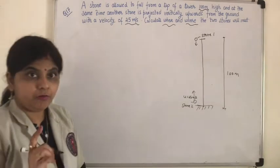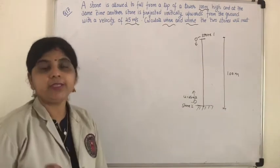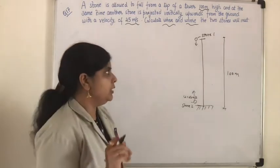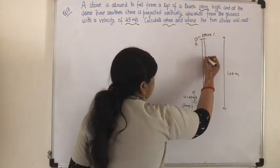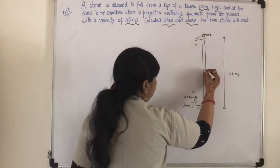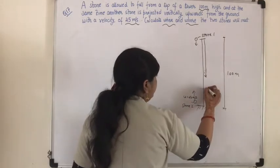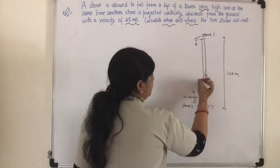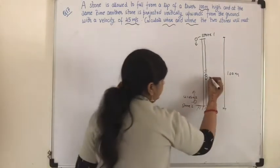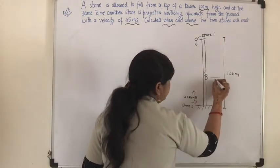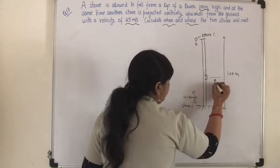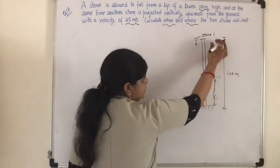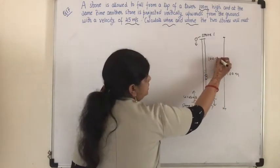Calculate when — meaning time — and where — meaning distance. I assume that stone 1 comes down and stone 2 is moving up, and they meet at a particular point. I assume this distance from the ground to the meeting point to be x meters, so the distance stone 1 travels will be 100 minus x.